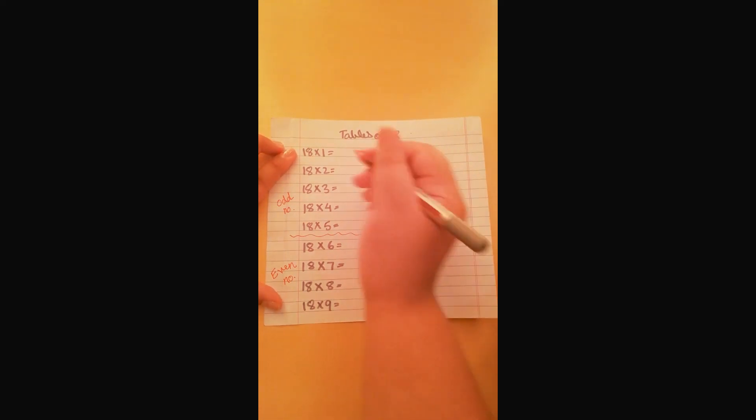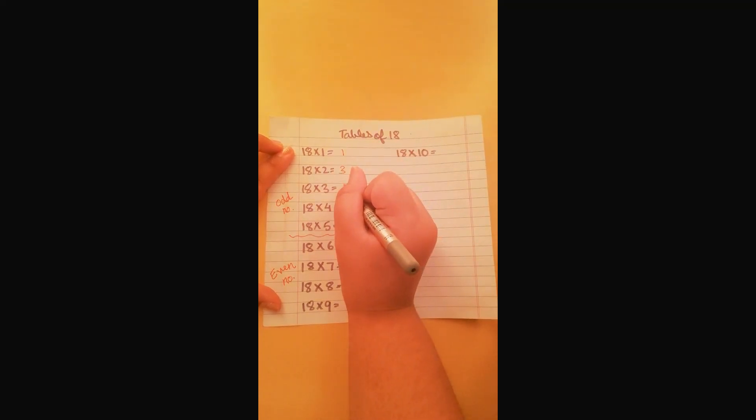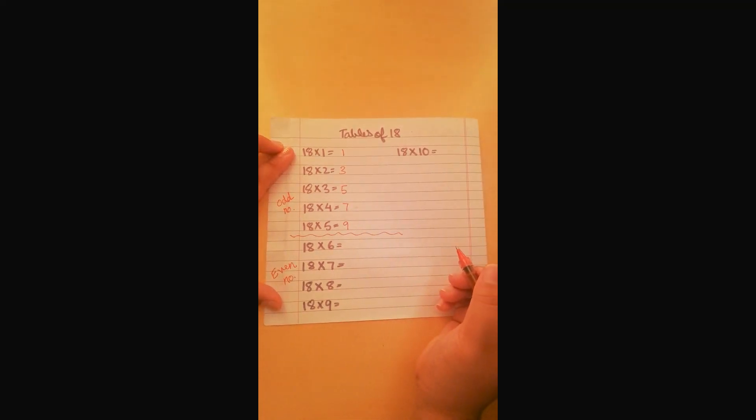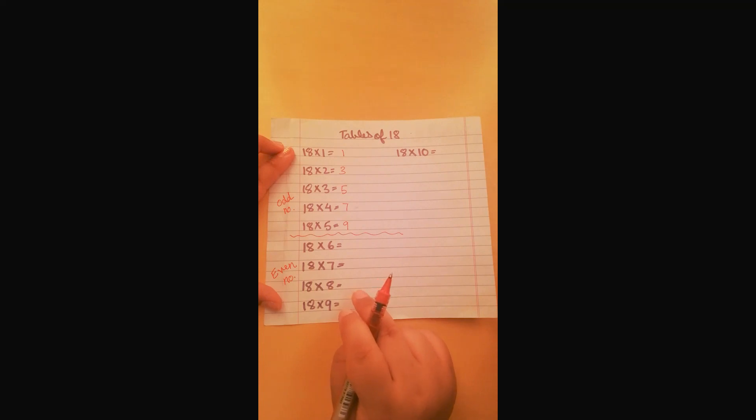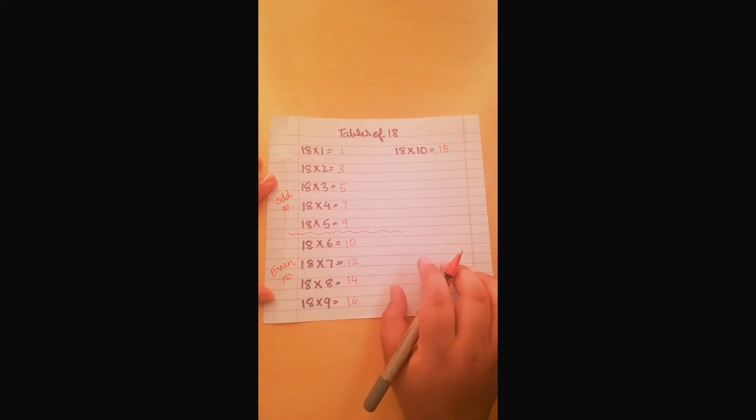In the first group we are going to start the odd numbers from 1: 1, 3, 5, 7, 9. In the second group we are going to start the even numbers from 10: 10, 12, 14, 16, 18. Now in the second column we are going to write the even numbers from 8.